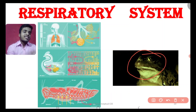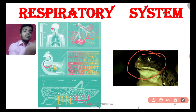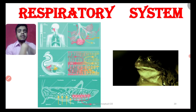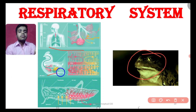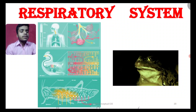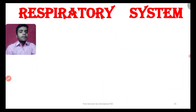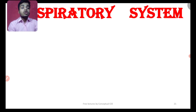Let's see how respiration occurs in frog. We can compare modalities of respiration in different organisms like humans, birds, cockroach, and frog. Respiration in frog involves ventilation, inspiration, expiration, and tissue respiration.